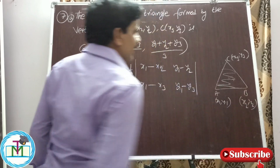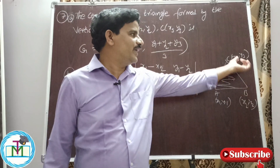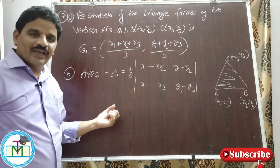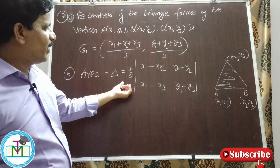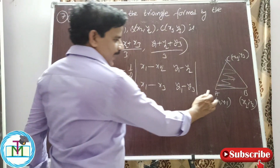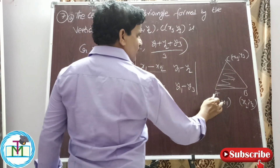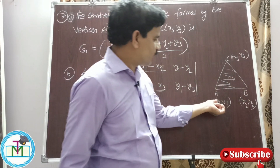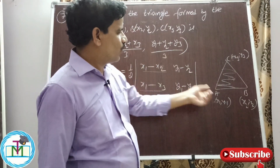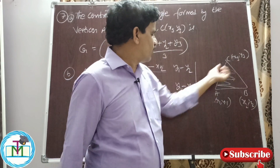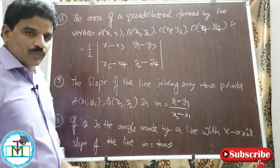The area of a triangle formed by vertices A(x1, y1), B(x2, y2), and C(x3, y3) — this is a very simple shortcut. Delta = ½ × determinant of the 2×2 matrix with first column (x1 − x2, x1 − x3) and second column (y1 − y2, y1 − y3). Find the determinant and you can easily get the answer within seconds.